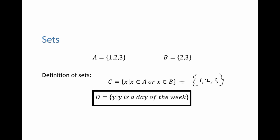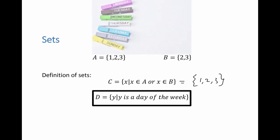Similarly, we can say D is the set whose elements are of the form y, such that — after that vertical line — we define the properties of what y is. Here, y is the day of the week, so D would be the set of all the days in the week.